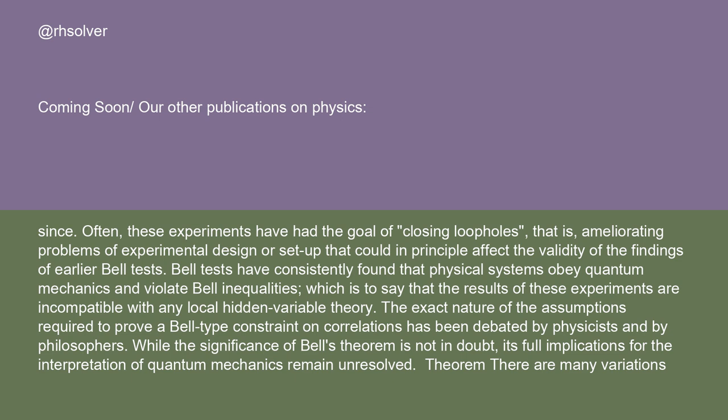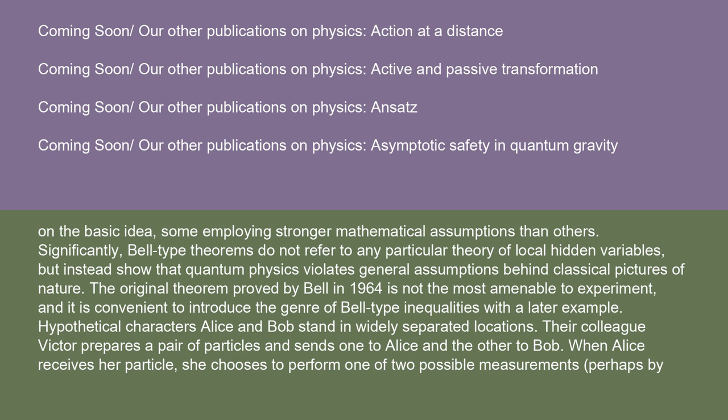There are many variations on the basic idea, some employing stronger mathematical assumptions than others. Significantly, Bell-type theorems do not refer to any particular theory of local hidden variables, but instead show that quantum physics violates general assumptions behind classical pictures of nature.